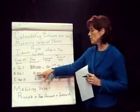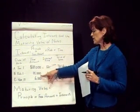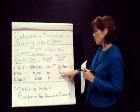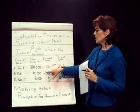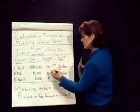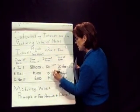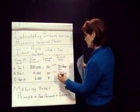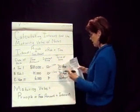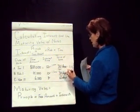The next note is dated February the 1st. The face amount or principal is $15,000 at 10% for 30 days. So if we take $15,000 times 10%, that gives us $1,500, and then multiply by 30 over 360, which gives us $125.